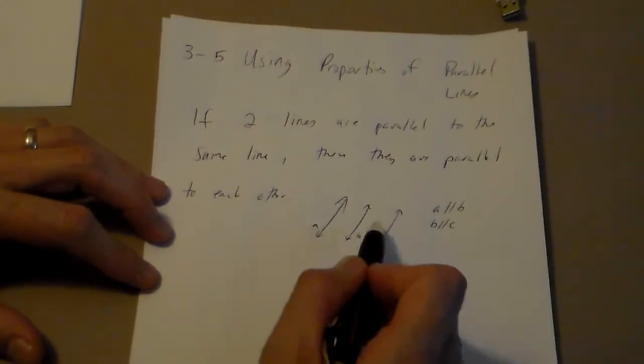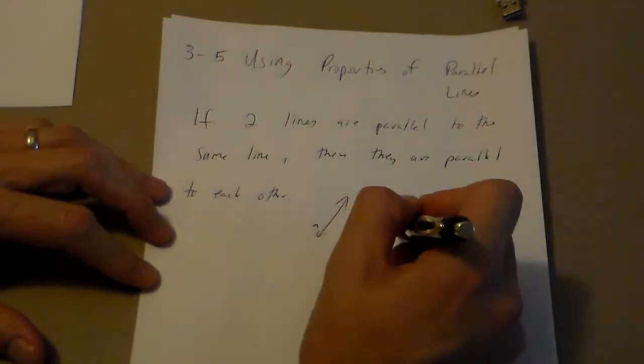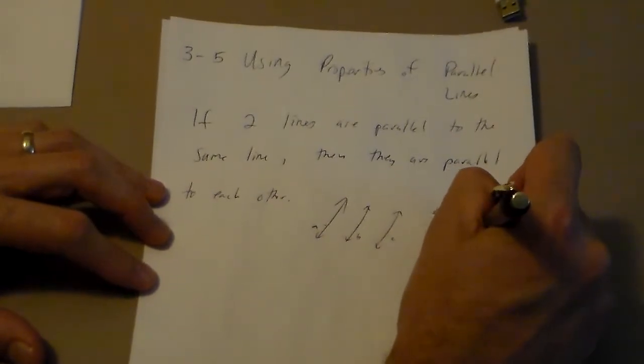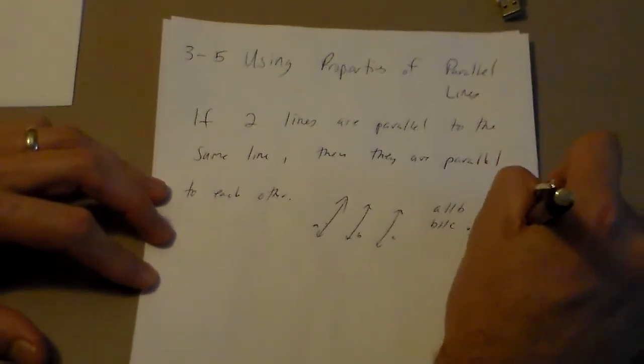So if these two are parallel, and these two are parallel, then we can say that sometimes you'll see this. This means, therefore, A is parallel to C.